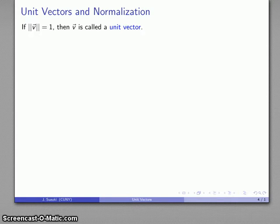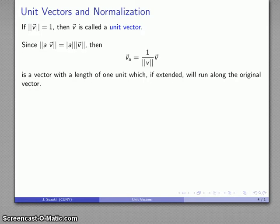And because of that property that the scalar multiple of a vector will have magnitude equal to the absolute value of the scalar times the vector, if I want to create a unit vector, I can take my original vector and scalar multiply it by the reciprocal one over the magnitude.